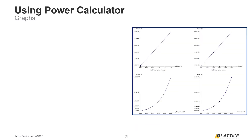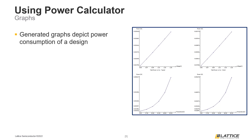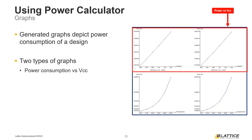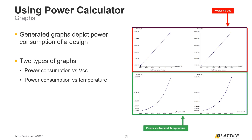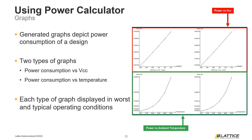The next Power Calculator tab we are going to discuss is the Graph tab. Power Calculator's Graph tab displays the total power consumption of a design as its voltages and ambient temperatures are varied. The two graphs at the top of the window display the total power consumption of a design as its source voltage is varied. The bottom two graphs in this window display the total power consumption of a design as the ambient temperature is varied. One useful feature of the graphs in this tab is that it displays the power consumption for a design in worst and typical operating conditions.